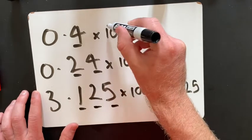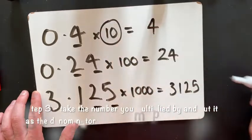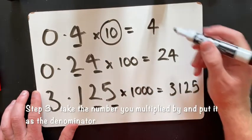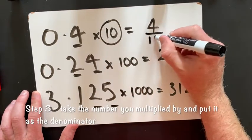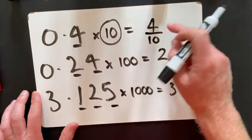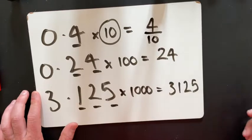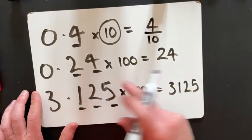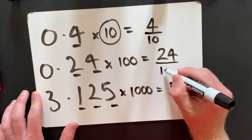Then all you do is you take the number that you multiplied it by and put that down as the denominator. So I multiplied 0.4 by 10, so I put the 10 at the bottom. I multiplied 0.24 by 100, so I put 100 at the bottom.